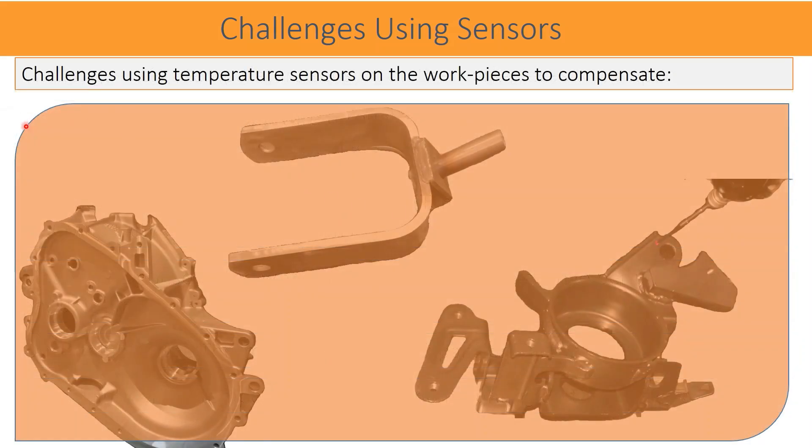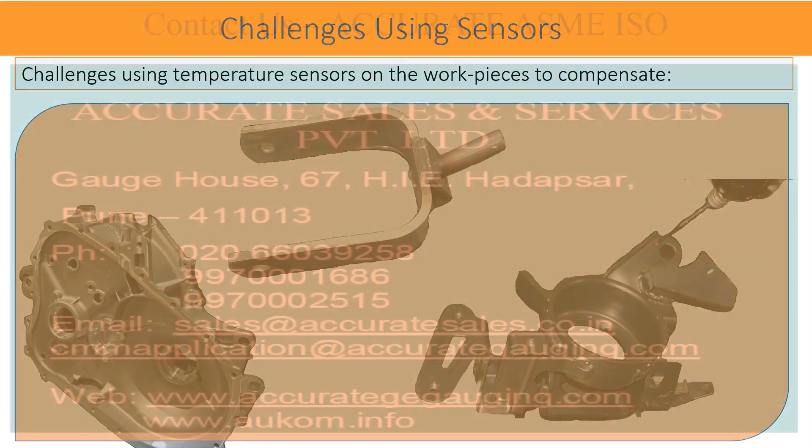The complex part shapes as shown in the photographs are very much difficult to compensate for the temperature, because the deformation of the structure in volumetric is always unpredictable, whereas temperature compensation is only applied in linear direction of the axis.